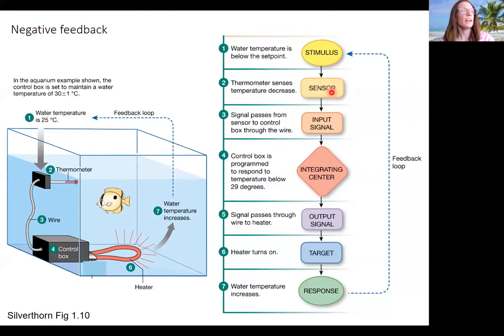We need something to detect that. A sensor, you'll see it called receptor sometimes. In this case, that's a thermometer. Thermometer is going to detect that decrease. Here's a thermometer actually in the aquarium. And there's a wire that's going to detect, transmit that information from the sensor to the integrating center. It's a signal. In our bodies, it's going to be nervous or endocrine system typically. That's our input signal. And you will see these diagrams drawn without the input and output signal. Sometimes they are really important, so I want to include them from the get go.